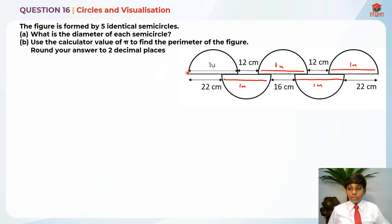I'm going to form an equation for both of these. So I'm going to find the total length: one unit plus 12 cm plus one unit plus 12 cm plus one unit. After that, this total length equals 22 cm plus one unit plus 16 cm plus one unit plus 22 cm. Both of these are equal to each other.